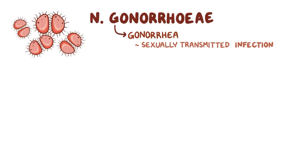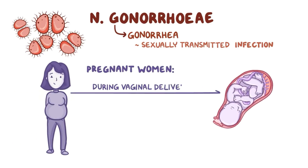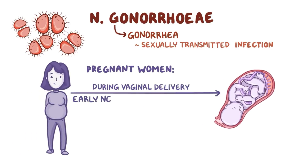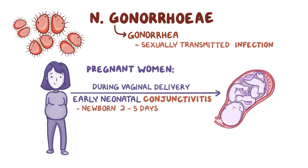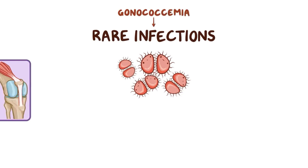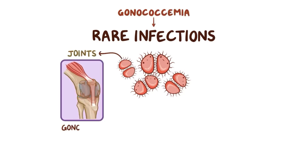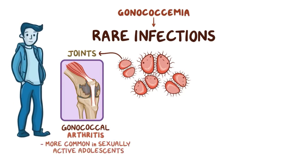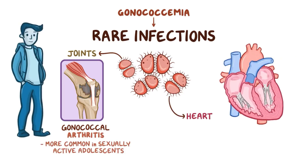If N. gonorrhoeae infects pregnant women, it can spread to the baby during vaginal delivery, and result in early neonatal conjunctivitis, a type of conjunctivitis that affects the newborn 2-5 days after birth. N. gonorrhoeae can also cause some rare but serious infections, often as a consequence of gonococcemia. When the infection spreads to the joints, it might cause gonococcal arthritis, which is more common in sexually active adolescents. If it spreads to the heart, it might affect the heart valves, causing endocarditis.